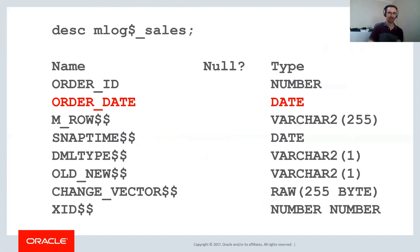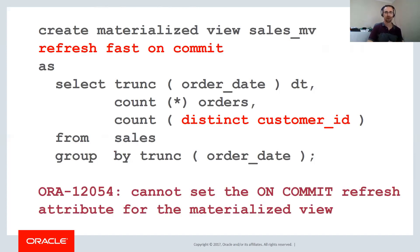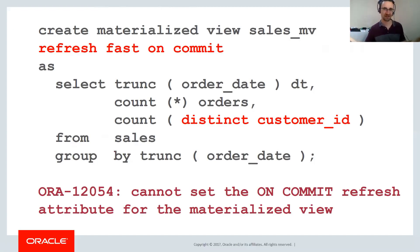We rebuild the materialized view log with the order_date and any other needed columns. We've got the order dates and we can see what they are — great, we're making some progress. So we can build a fast refresh on commit materialized view. But in the meantime, new requirements come in: we don't just want to count how many orders were placed each day, we also want to see how many different customers placed an order each day. We try that and get ORA-12054: cannot set the on commit refresh attribute.